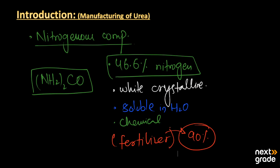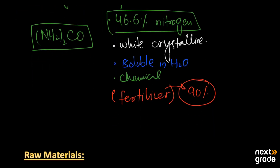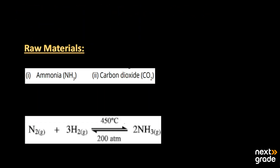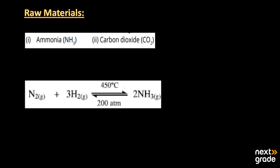Now let's look at the manufacturing of urea. The first raw material we need is ammonia, NH₃, and the second is carbon dioxide, CO₂. These two raw materials are required for the production of urea.